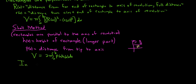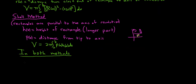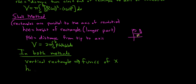In both methods, this is also extremely important and considered one of the hardest topics in calculus 2. In both methods, if you have a vertical rectangle, all your functions are functions of x. And if you have a horizontal rectangle, you have functions of y. So you can actually do the problems.